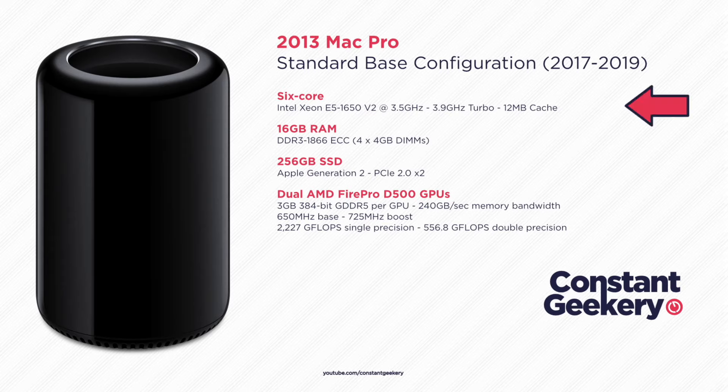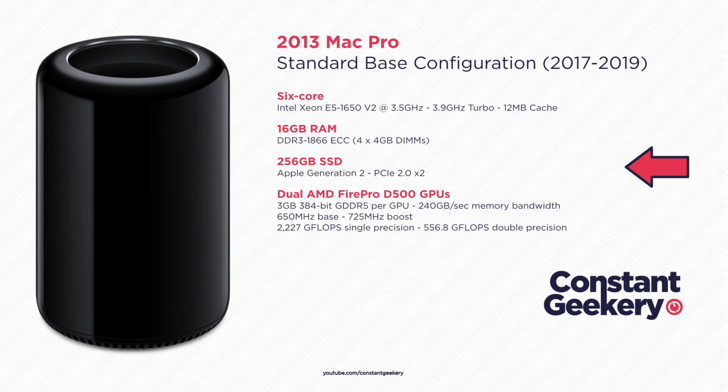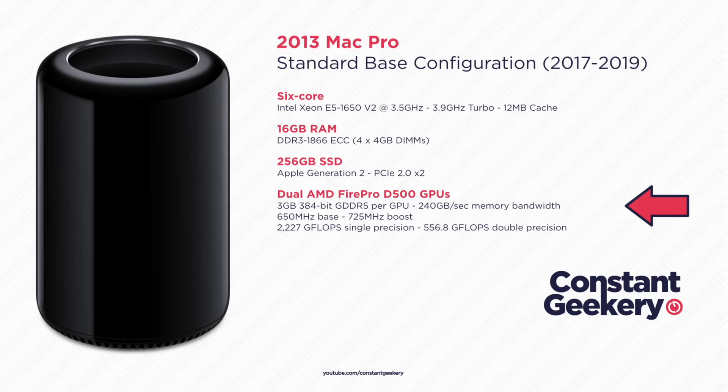Then you had an improved model that you could purchase, and that was the 6-core. The 6-core featured a Xeon E5 1650 version 2 CPU, and you got a bump from 12 to 16 gigabytes of RAM. The SSD stayed the same at 256 gigs, but the graphics option was now two AMD Fire Pro D500 GPUs, each with 3 gigabytes of memory. These were the two pre-configured options you could buy directly from Apple or off the shelf.